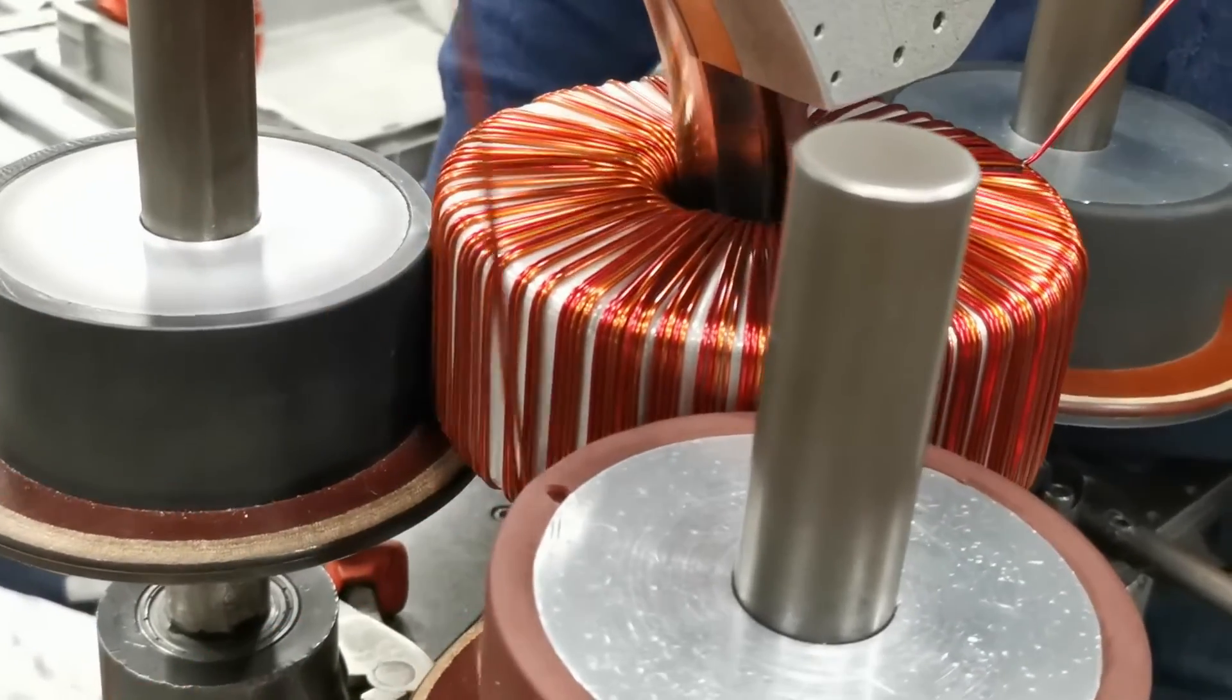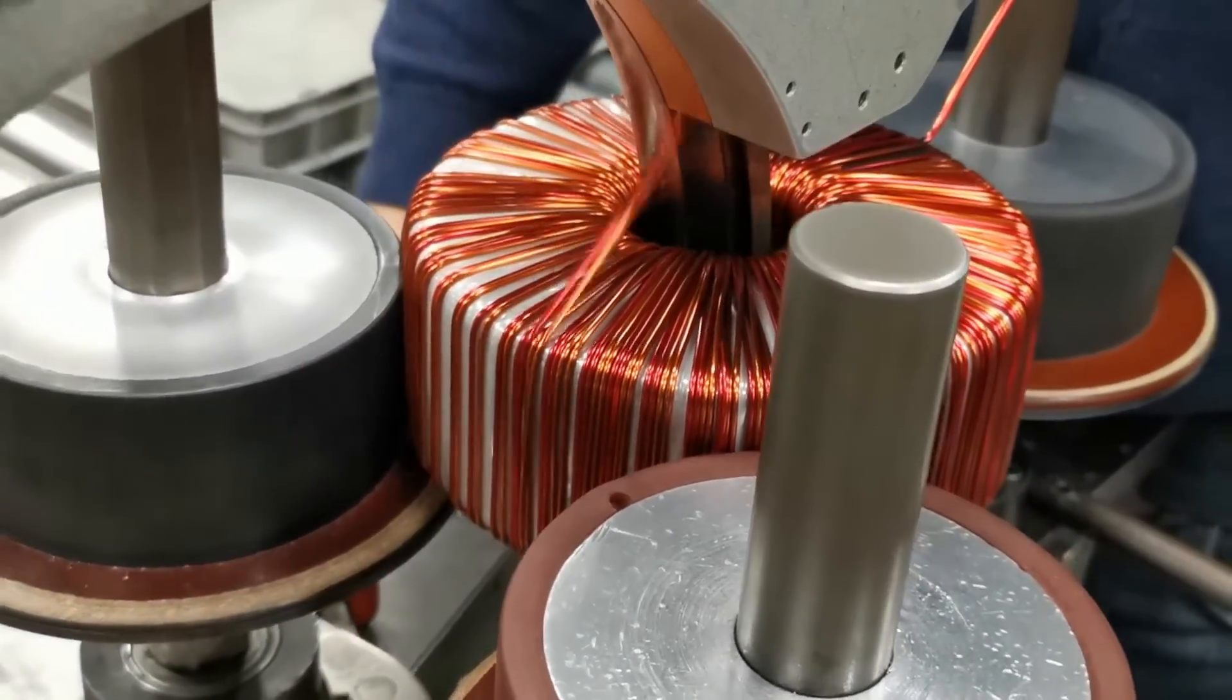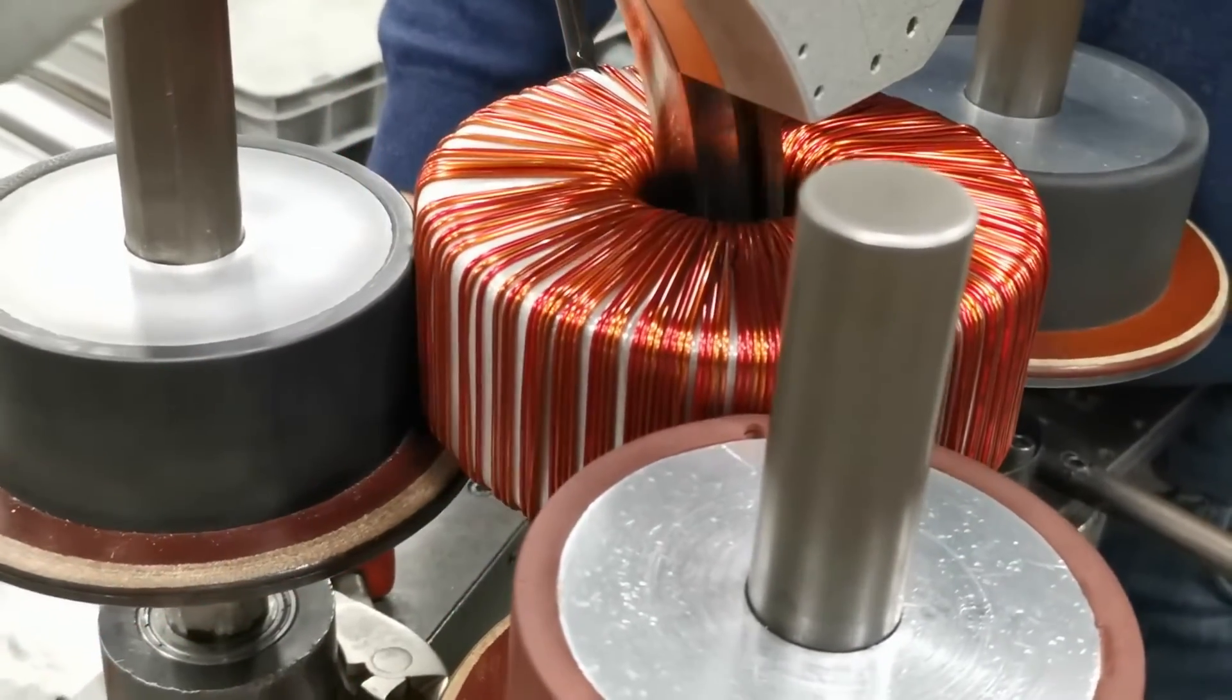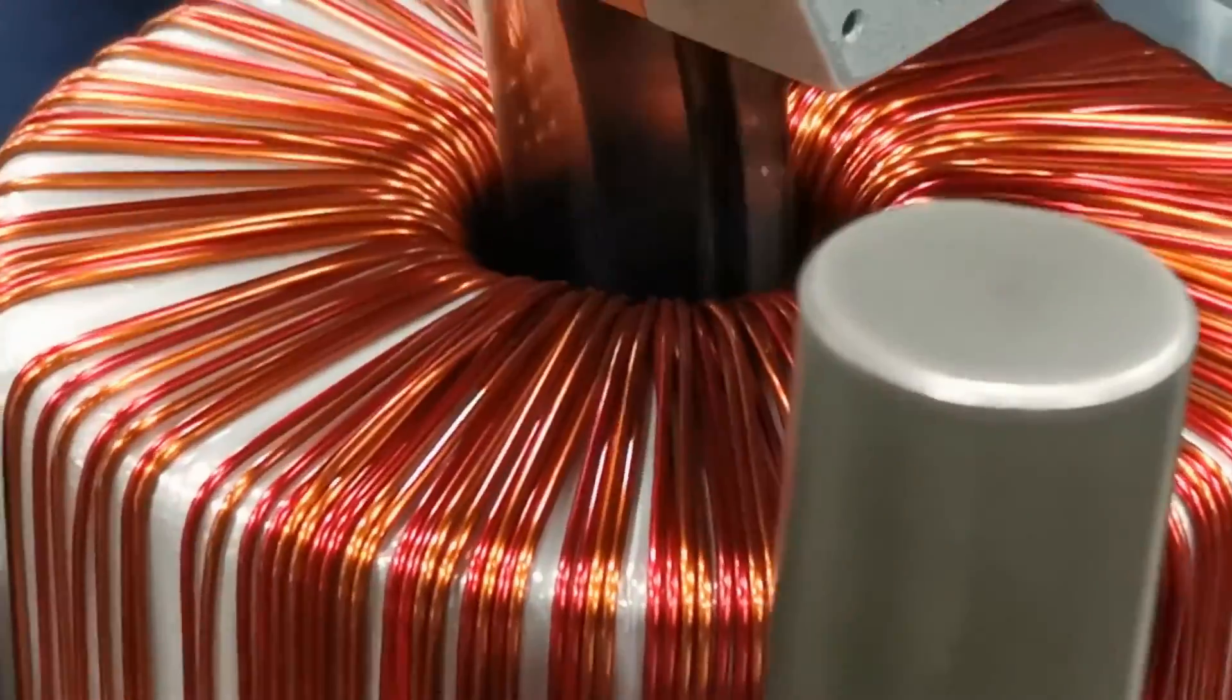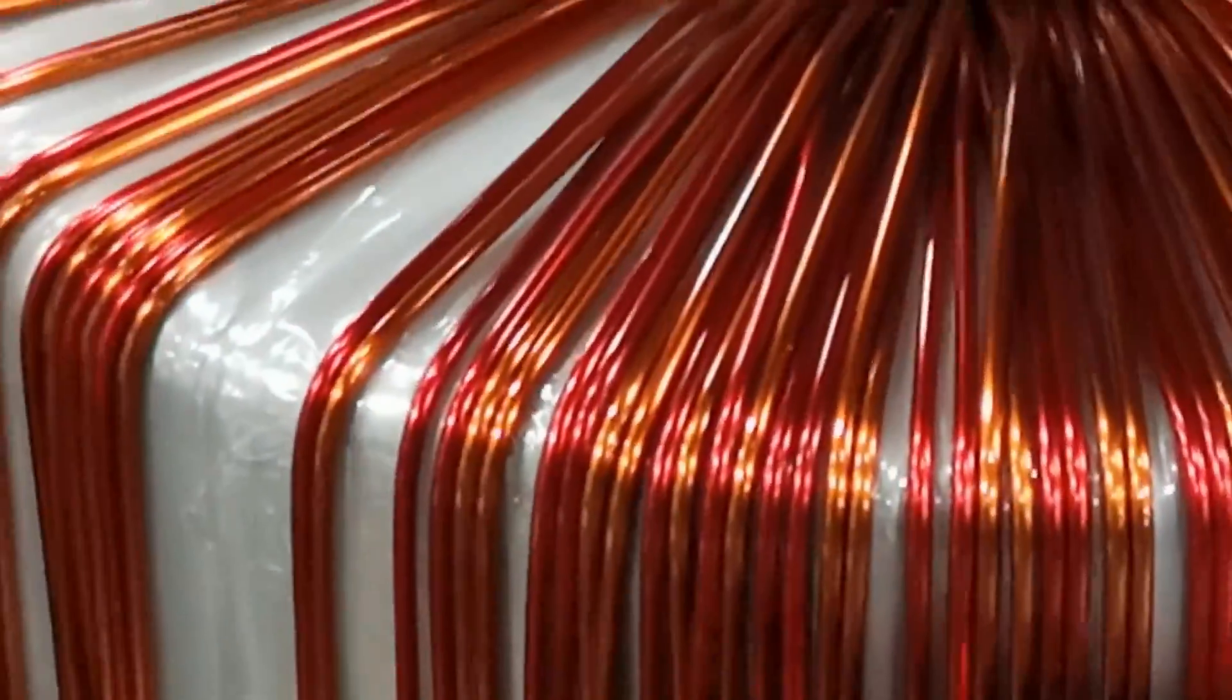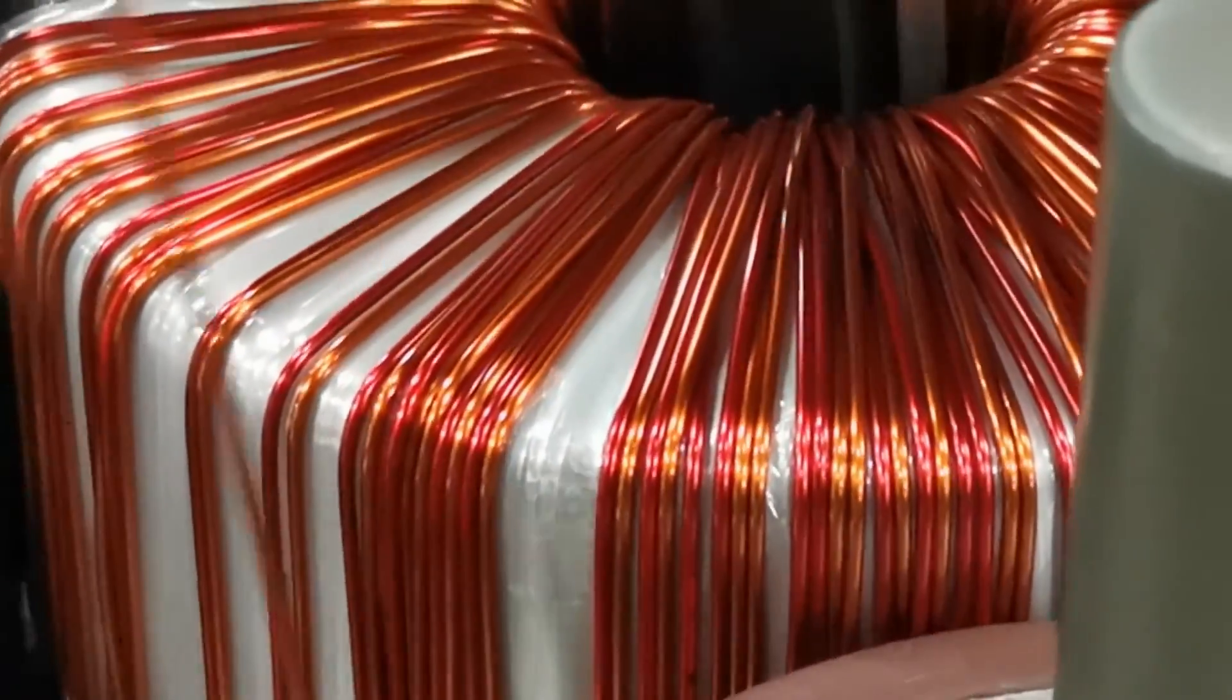It's crucial to note that no physical electrical connection exists between these two windings. They're linked solely by the magnetic field within the core. As the fluctuating magnetic field sweeps through the secondary winding, it induces a voltage. This is electromagnetic induction in action. The change in the magnetic field generates an electromotive force or voltage in the secondary coil.